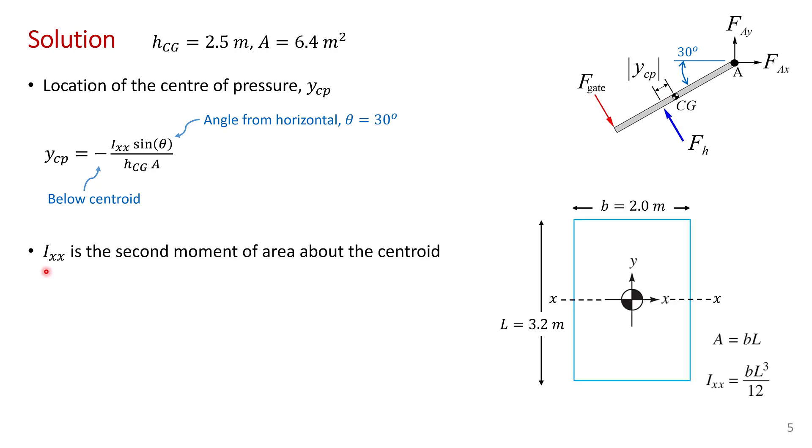So just to remind yourself, ixx is the second moment of area of the rectangular gate about a horizontal axis that passes through the centroids. So xx. And you can look it up in a table in your book. You've probably done this when you did beam theory that it's the width of the rectangle times the length of the rectangle cubed over 12. Now in the problem statement we're told that l is 3.2 meters and this gate goes 2 meters into the page. So we get ixx equals b l cubed over 12 which works out to 5.461 cubic meters.